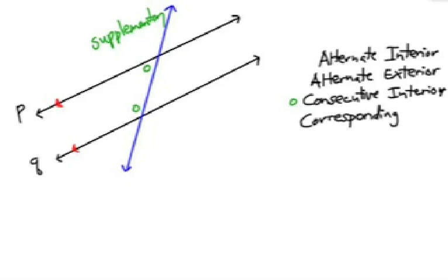So, if this angle was 45 degrees, what would this angle be? That's right, 135 degrees. On the other side, we have the other consecutive interior angle pair, and remember that they would be supplementary.